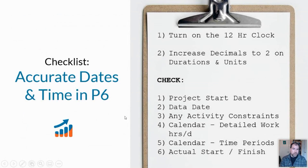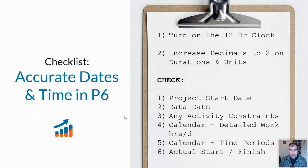Here's my checklist for you — you can screenshot this. To get accurate dates and times in P6: turn on the 12-hour clock in user preferences; also increase decimals to two places on durations and units, which will help you find these problems. Check your start date, your data date, any constraint dates, and your calendar — make sure things are starting and finishing at the right time of day. Check your time period settings in your calendar and your actual start and finish dates to make sure you have accurate dates and times.